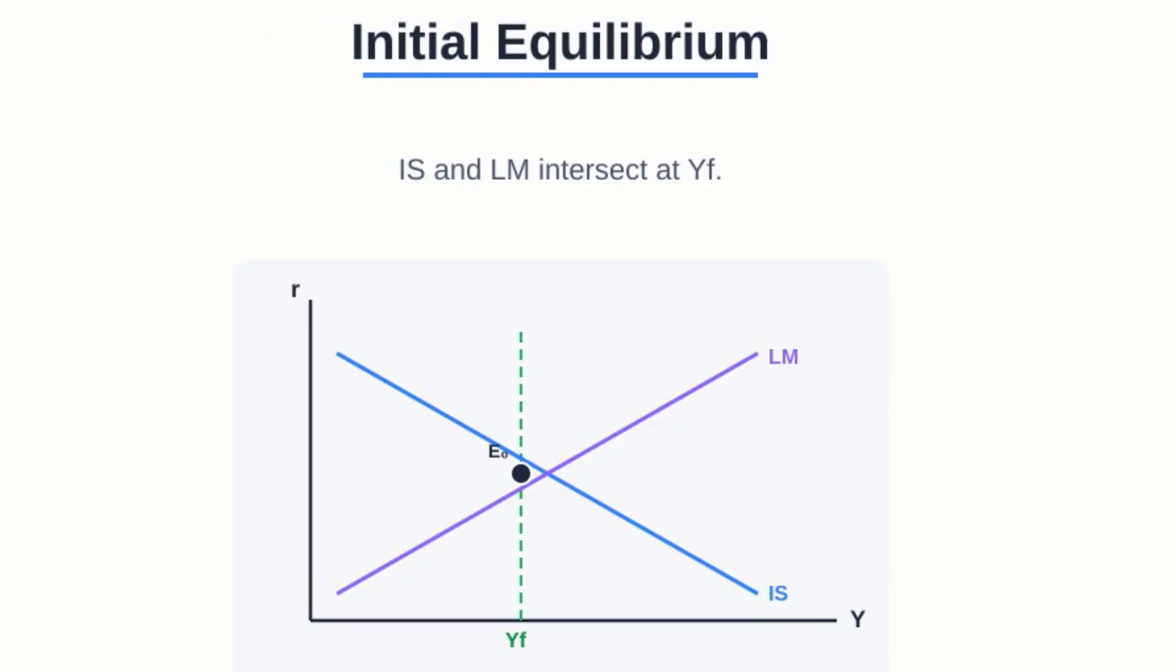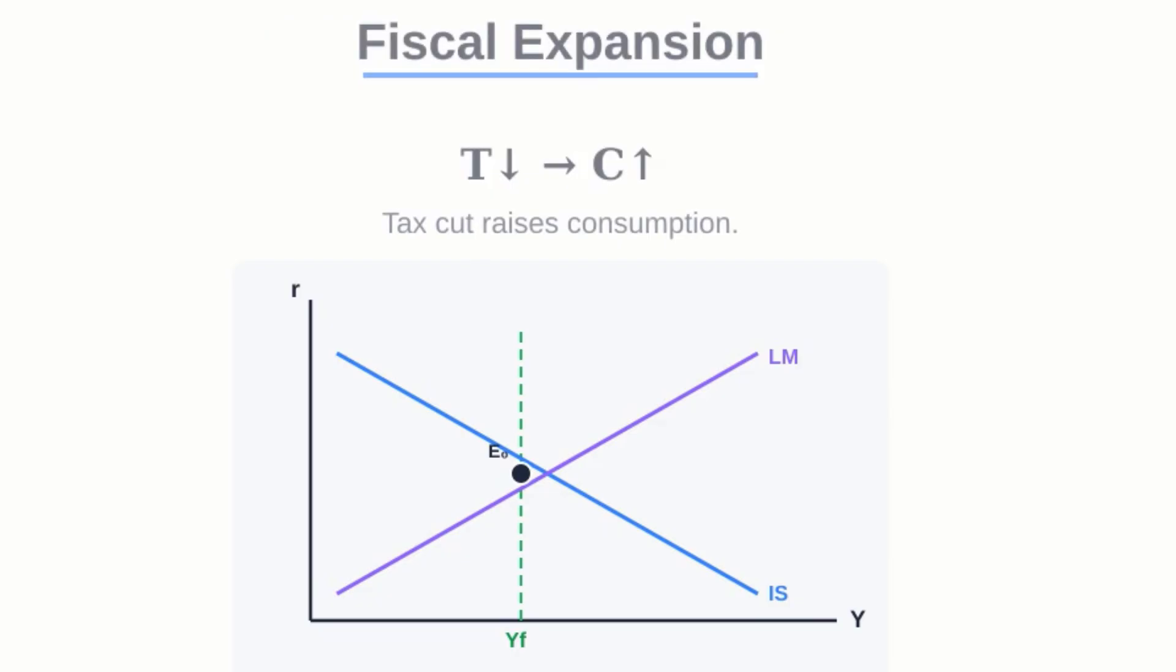First, think about the immediate effect. You cut taxes, people suddenly have more cash, so they spend it. This sends demand through the roof, way past what the economy can actually handle. You see this as a rightward shift in the IS curve.